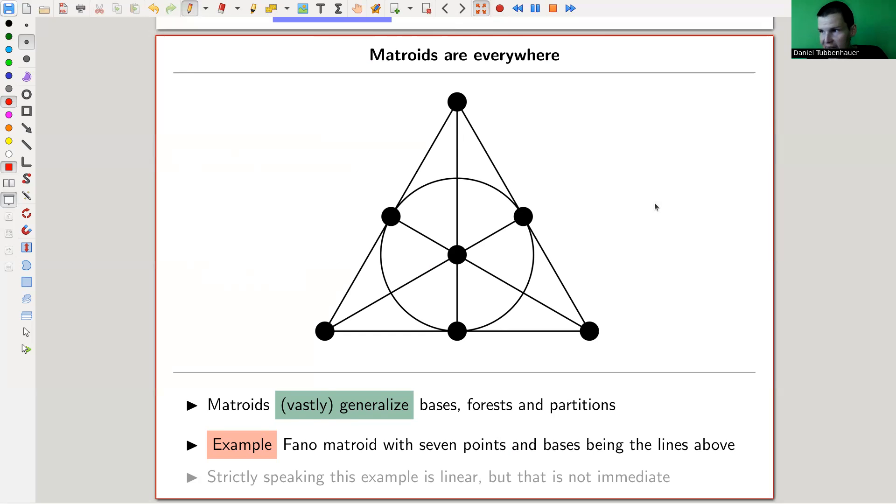So here's another example, which are matroids everywhere, which is also slightly obscure. Strictly speaking, this one is actually one of the bases type, but it's not obvious at all. So we do the following. It's called the Fano matroid. And it has seven points. It's exactly the points that you see. One, two, three, four, five, six, seven. And the bases being the lines. And you can always kind of exchange points in the bases such that you get a new basis. So it will satisfy the basis exchange.